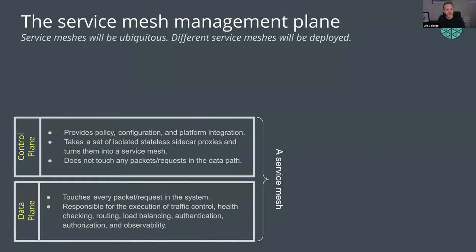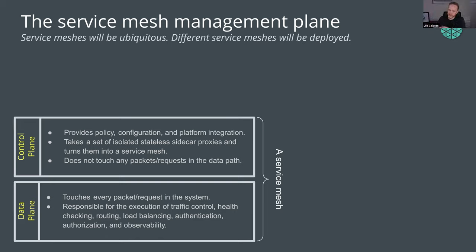In the land of service meshes, the data plane is really the collection of intelligent proxies that work in unison under the command and control of the control plane. The control plane generically handles configuration management of these intelligent proxies. The proxies are the workhorse — they're lifting packets and inspecting them, sending them along their way, rejecting them, denying them, injecting chaos, securing them. A service mesh brings a lot of control, insight, telemetry, security, and observability within the network.